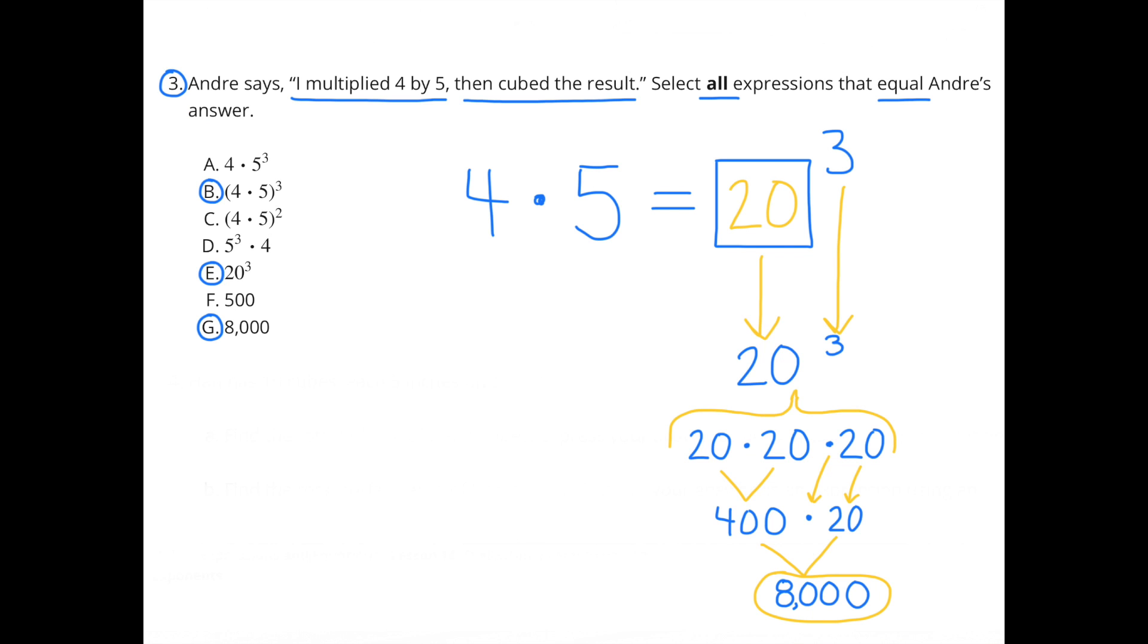Number 3. Andre says, I multiplied 4 by 5, then cubed the result. Select all expressions that equal Andre's answer. Remember, cubed is the same thing as to the third power, which means three-dimensional. A cube has three dimensions.